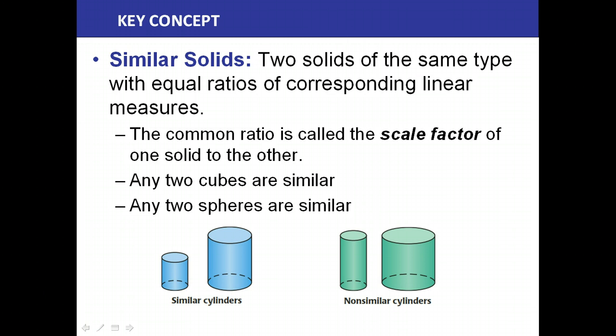So we can have similar cylinders, we can have non-similar cylinders. Notice that here the ratio stays the same. Here the height is the same, but the radius is different, so those would not be similar.